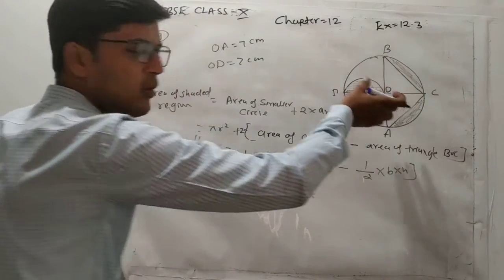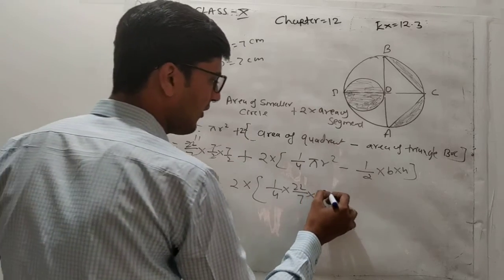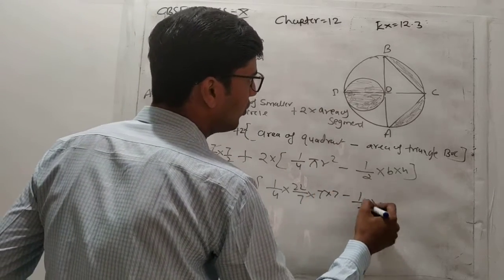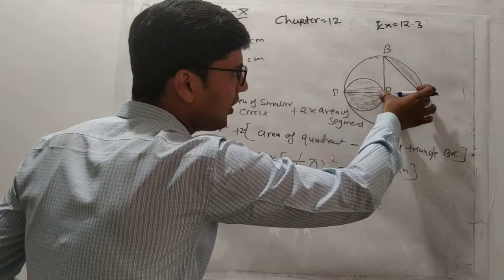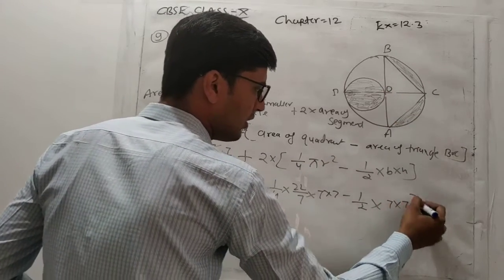So 7 into 7, minus 1 upon 2. This is the perpendicular and base, so 7 into 7.